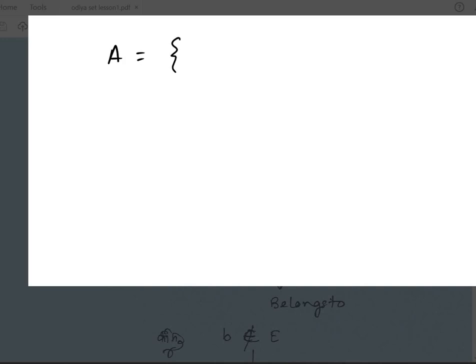A is such that x belongs to, equal to 2n, n belongs to N, and the limit is n less than or equal to 5. This is an example of set-builder form. Next class we will discuss more. If you like this video, please like and take care.